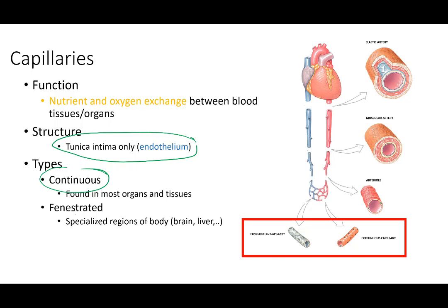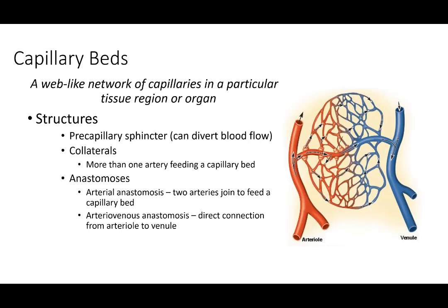It is in the capillaries that nutrient and oxygen exchange occurs — this is how tissues get oxygen and energy. Capillary beds are a web-like network of tiny vessels only one cell layer thick, right in the tissue bed. There are pre-capillary sphincters that can shut down or minimize flow to some regions and open up flow to others, diverting blood to areas that need it.